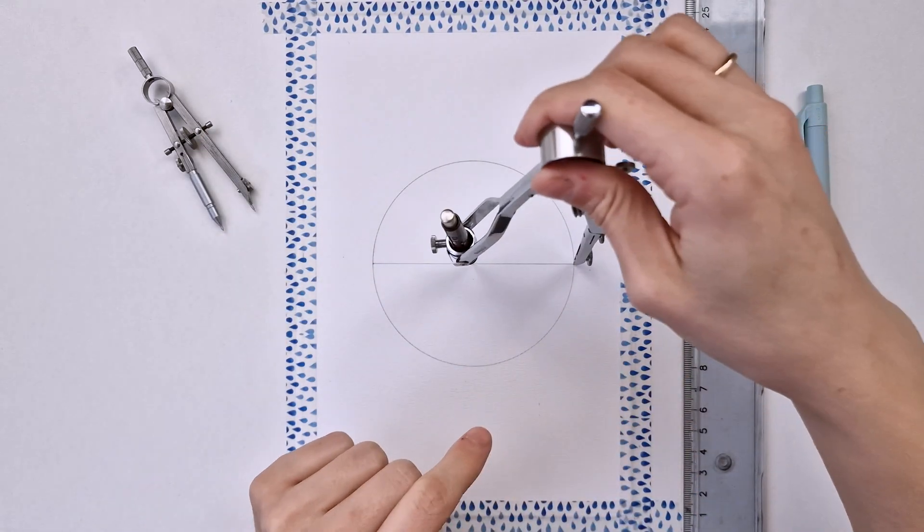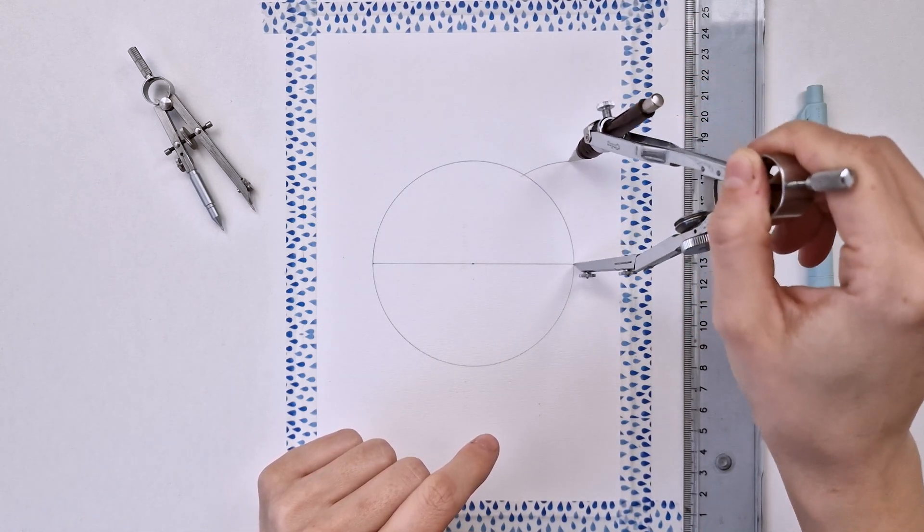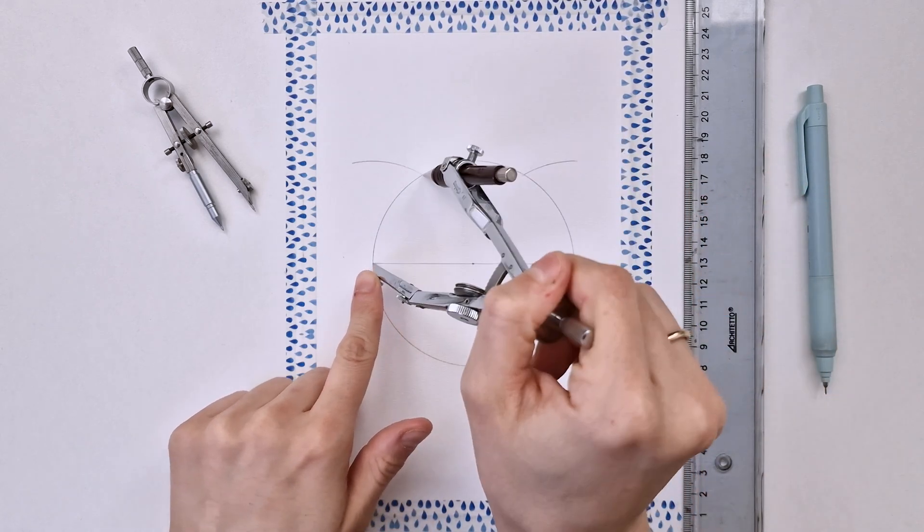Now I'm going back to my initial radius and making two marks pointing the compass on the right and then two marks pointing my compass on the left.